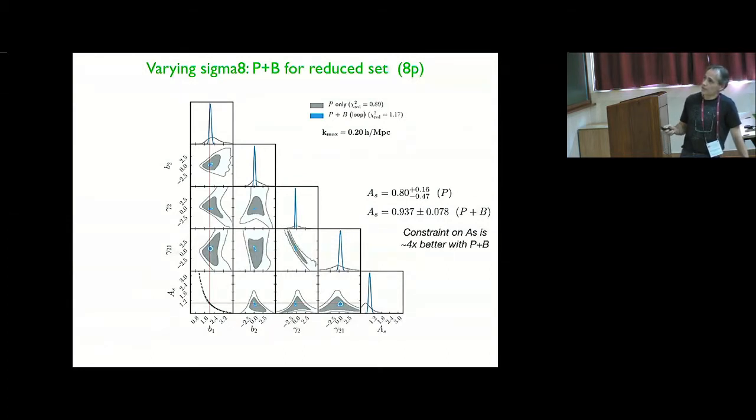So here's what happens now. Instead of having sigma eight as a parameter, I have AS, which is basically sigma eight squared. So that's the amplitude of the linear spectrum. And as is well known, if I have only power spectrum information, basically what you measure is B1 square AS in the galaxy power spectrum. So there is a very strong degeneracy which is given by that line. And the power spectrum has a very tough time in actually resolving that degeneracy. So if you look at AS, it has a very wide marginalized likelihood.